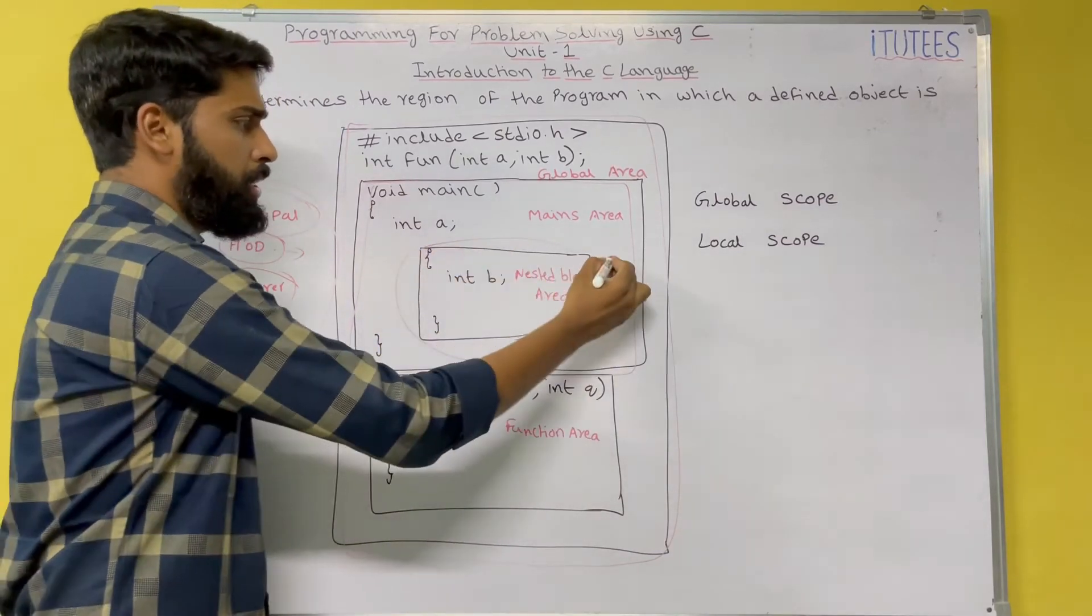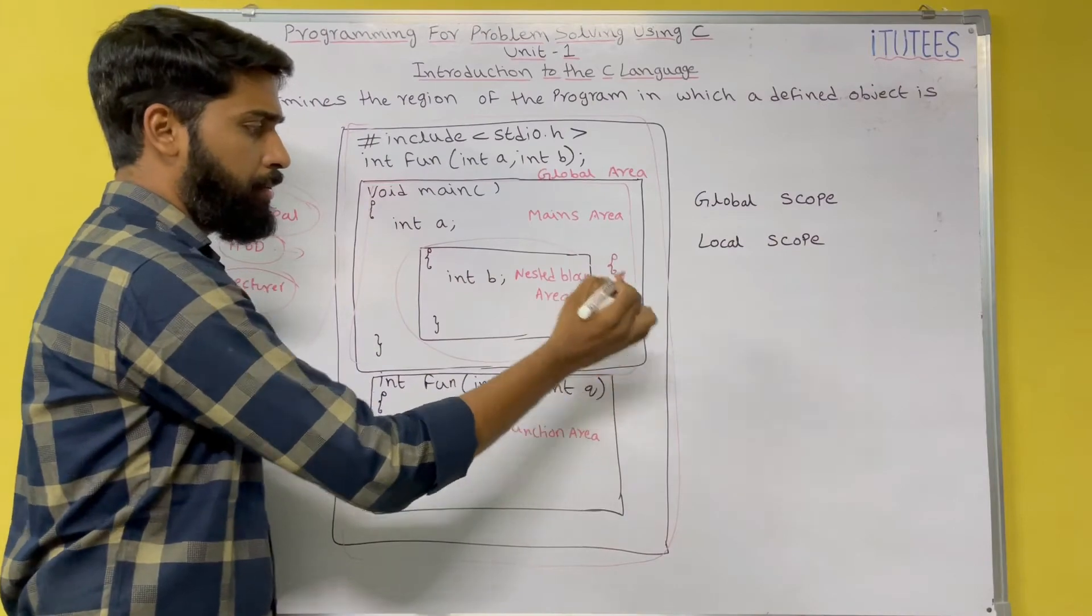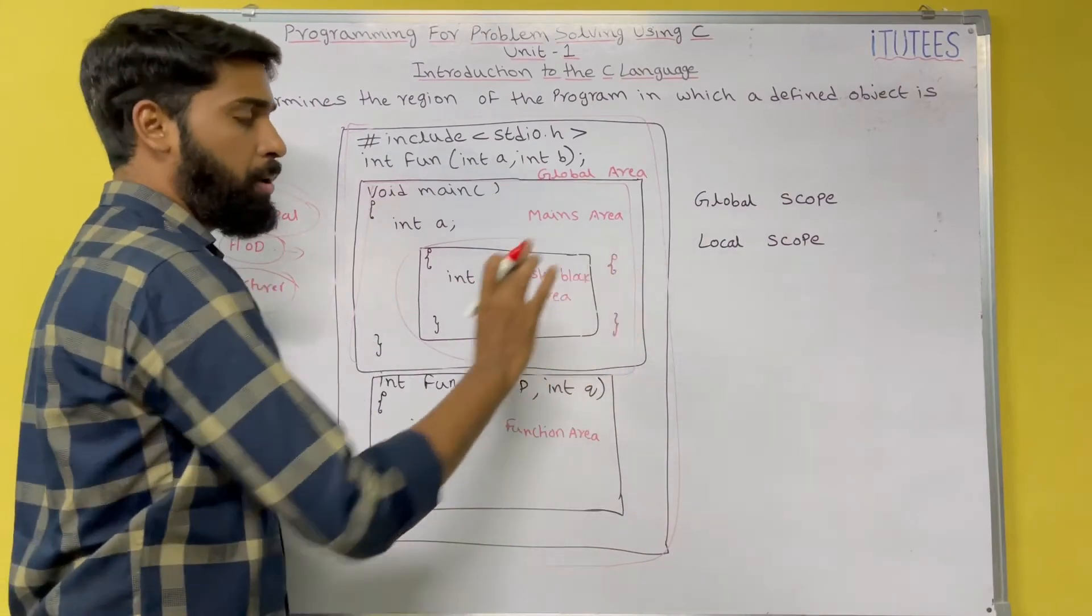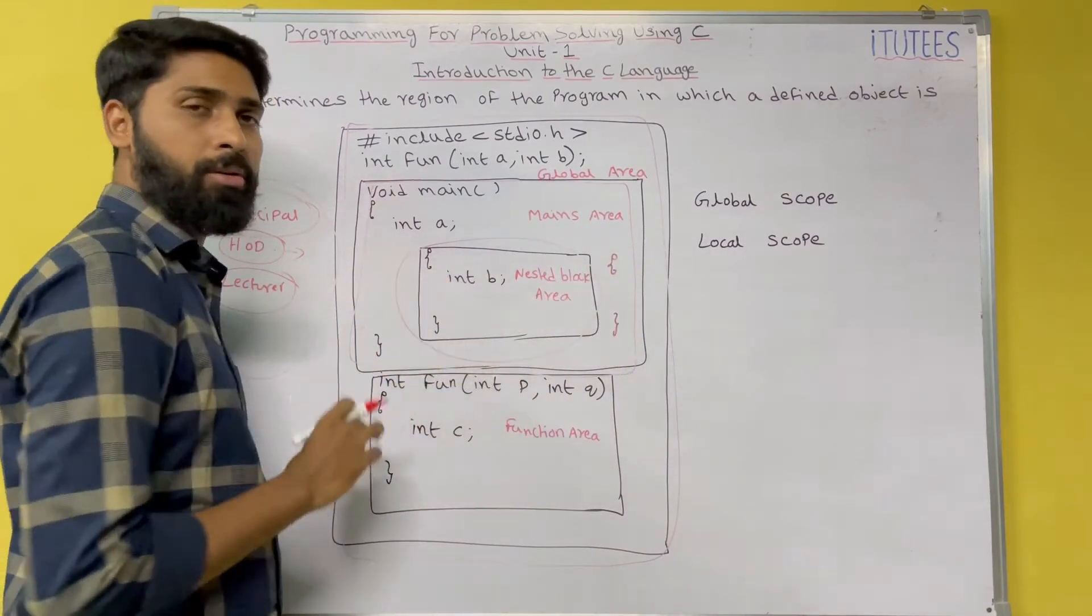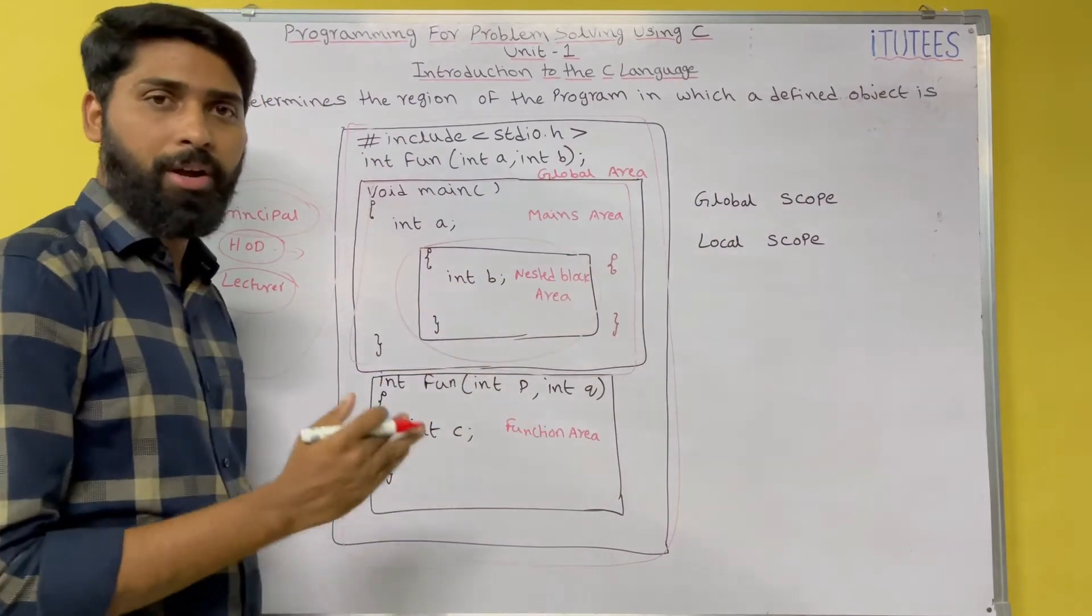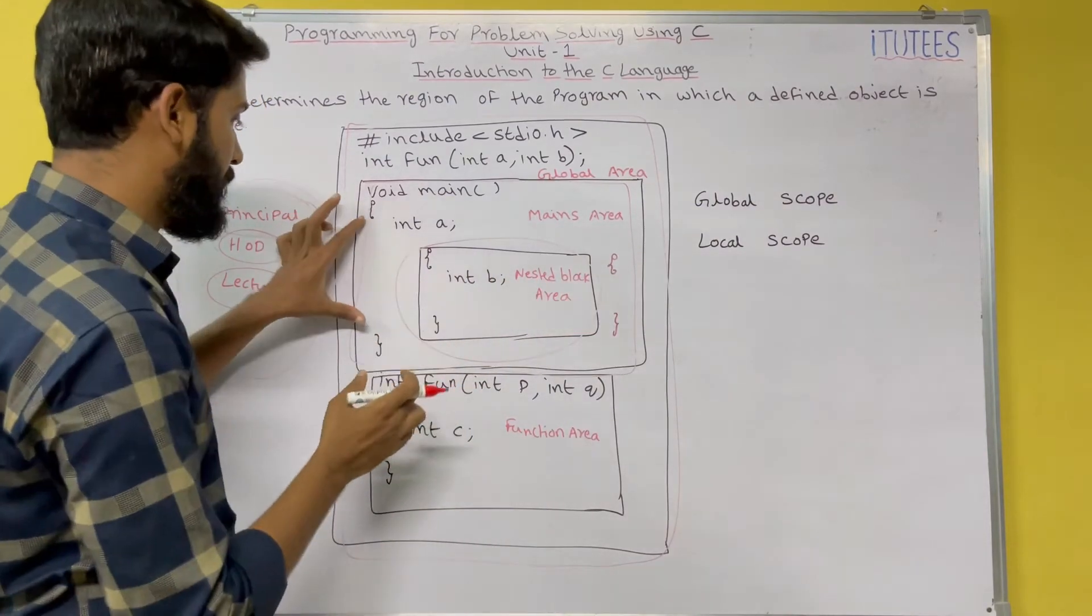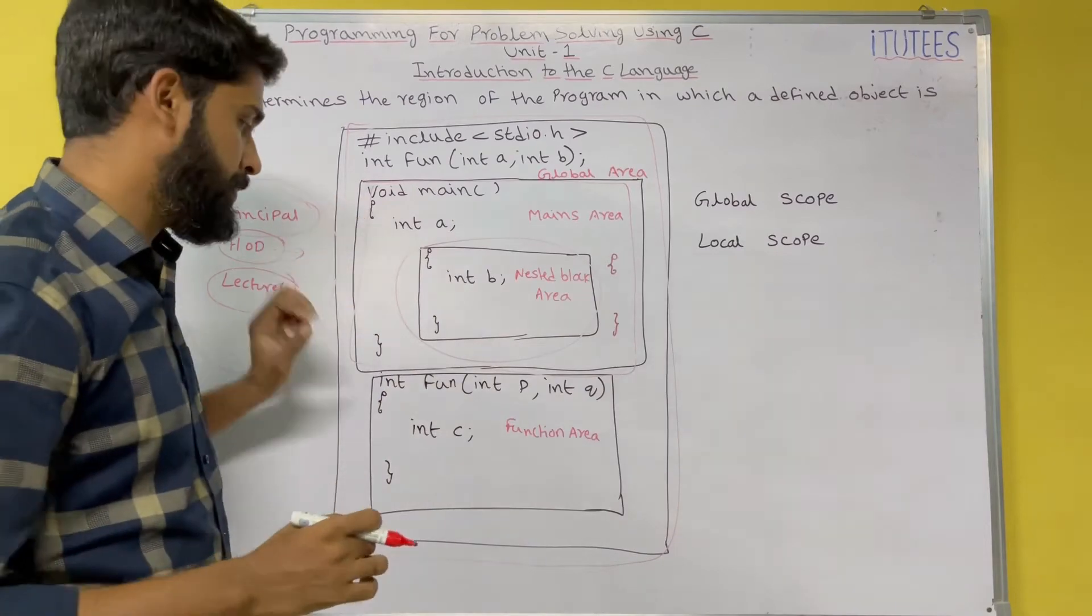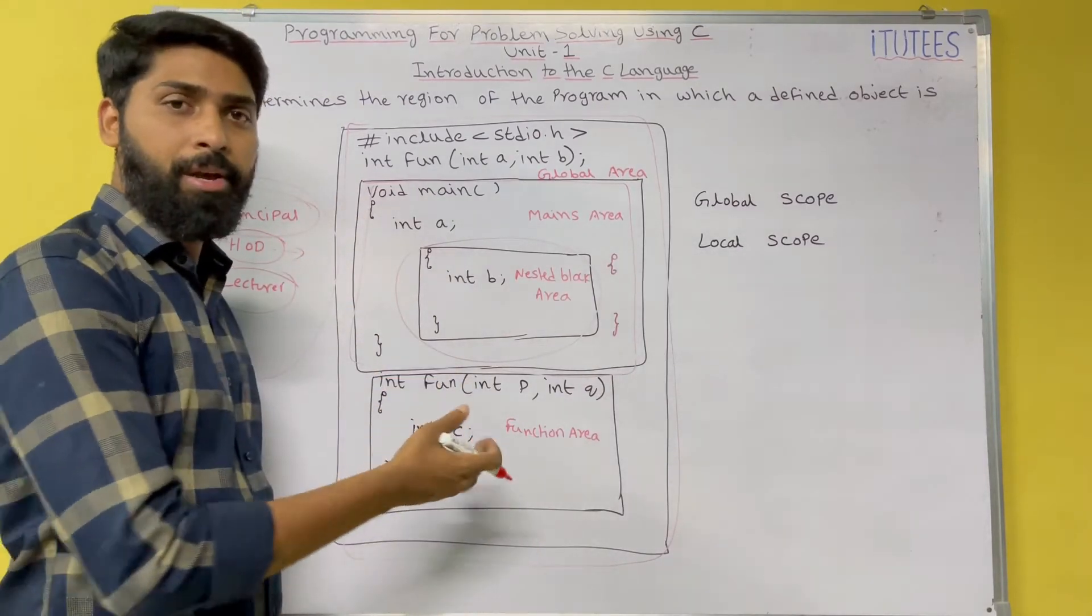So how we can define a block is nothing but, so flower bracket open, flower bracket close. That's it. So this is a block. So this type of blocks we are called as a nested block area. Why we call as a nested? It is nested in another block. And so this we are called as a function area.